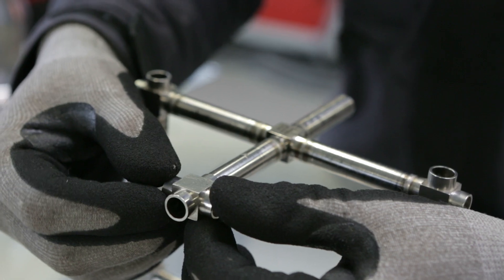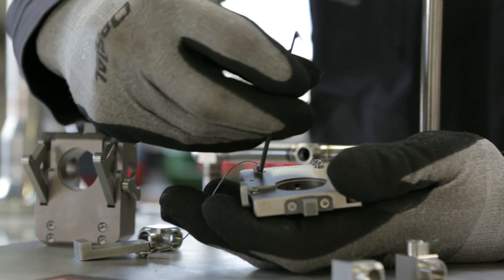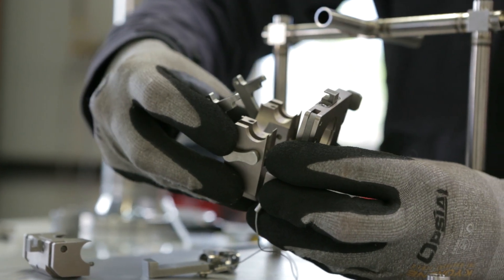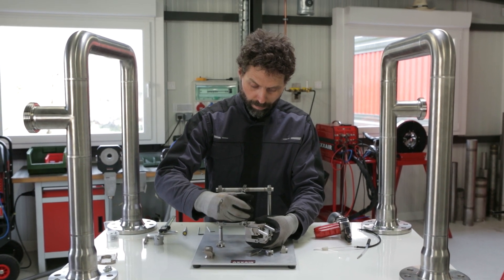First of all, we will choose the proper side plates to fit the elements that are to be welded. In our case, we are taking a large side plate for a micro fit fitting combined with a standard side plate for a tube with a diameter of half an inch or respectively 12.7 mm.